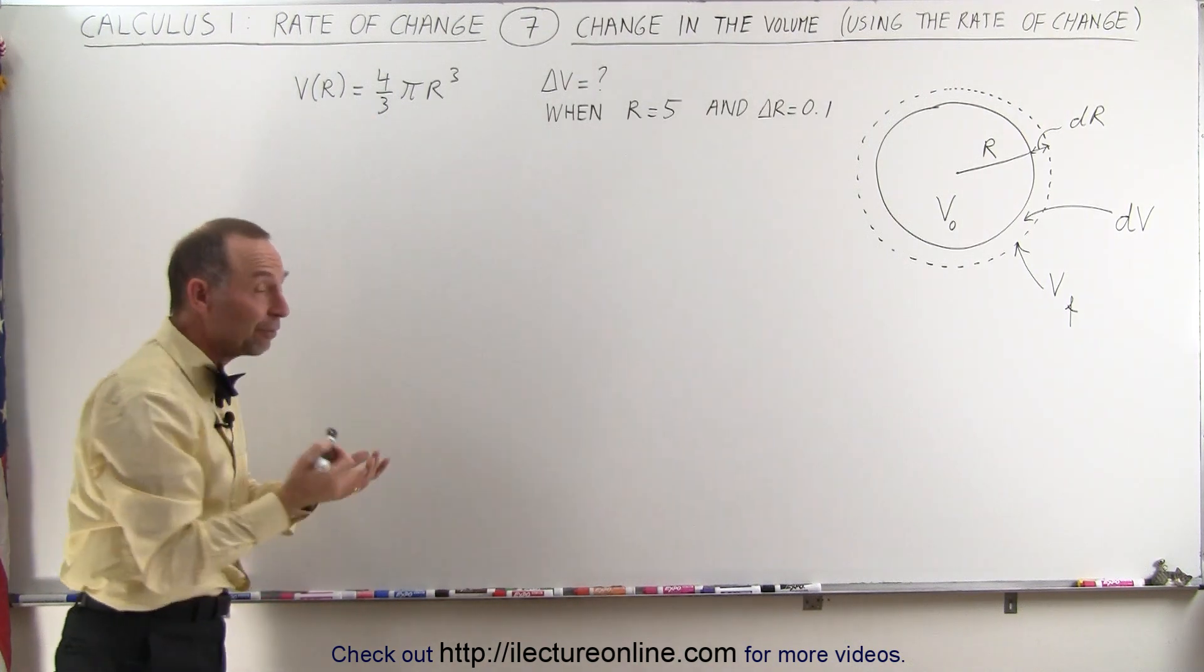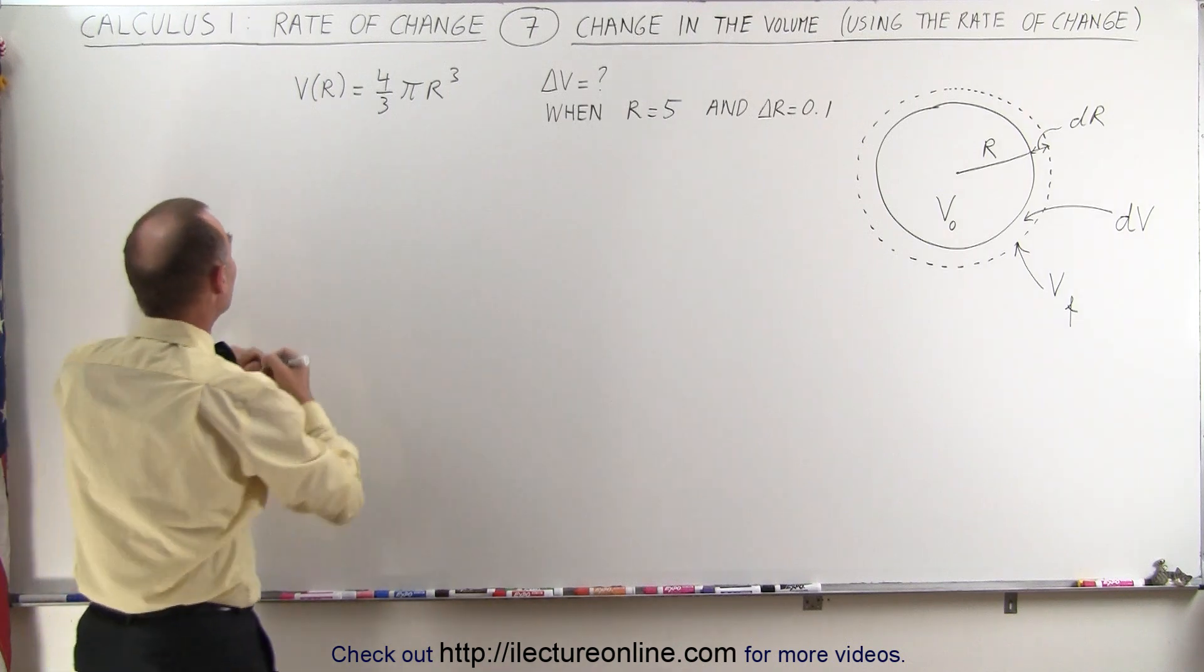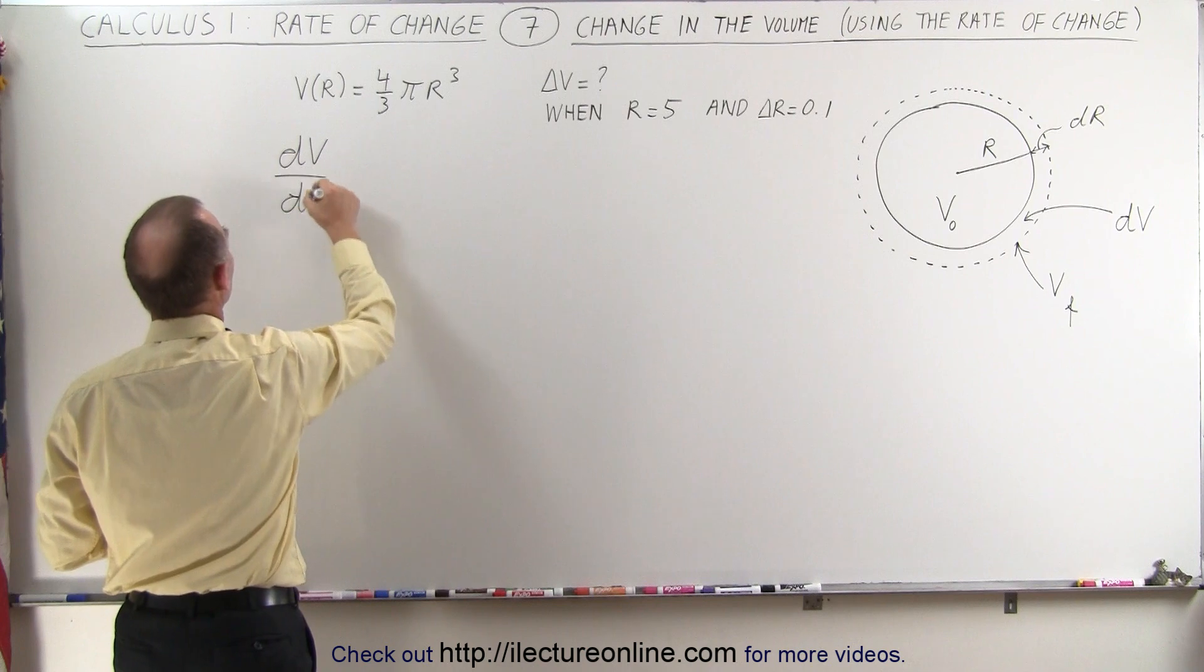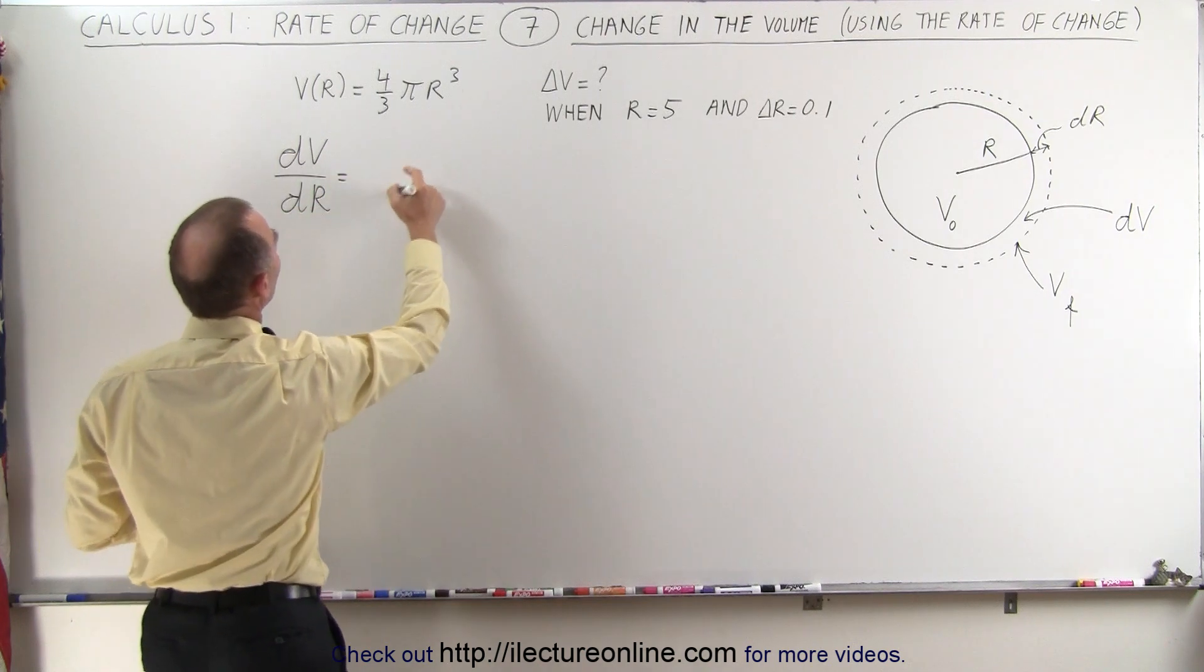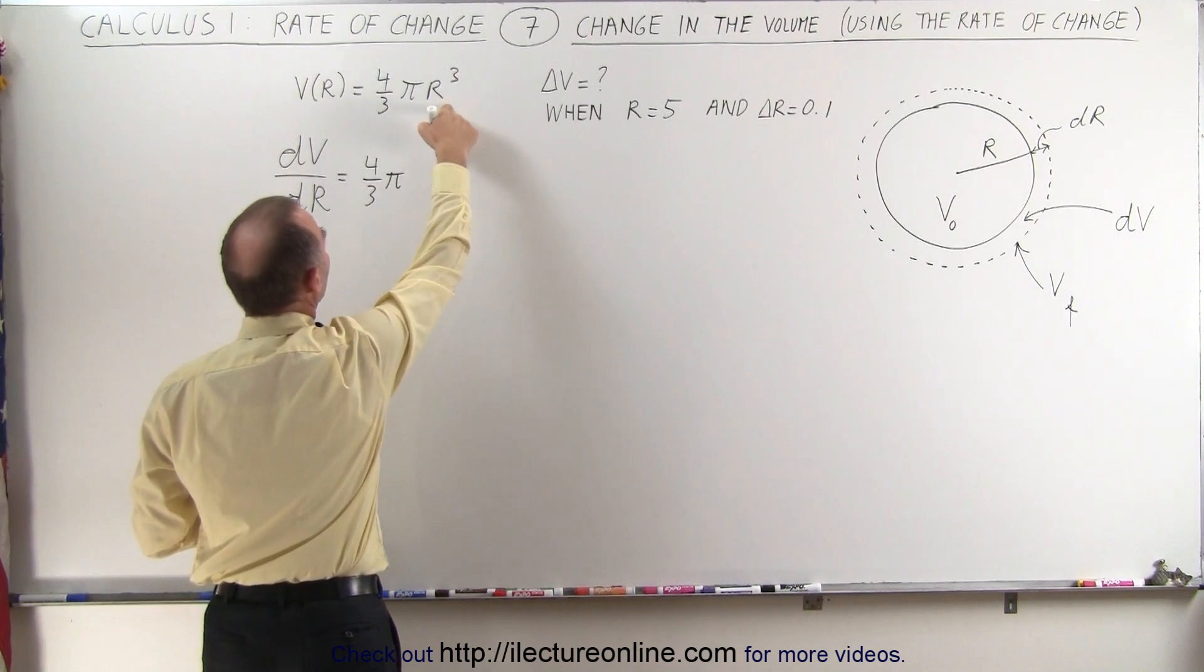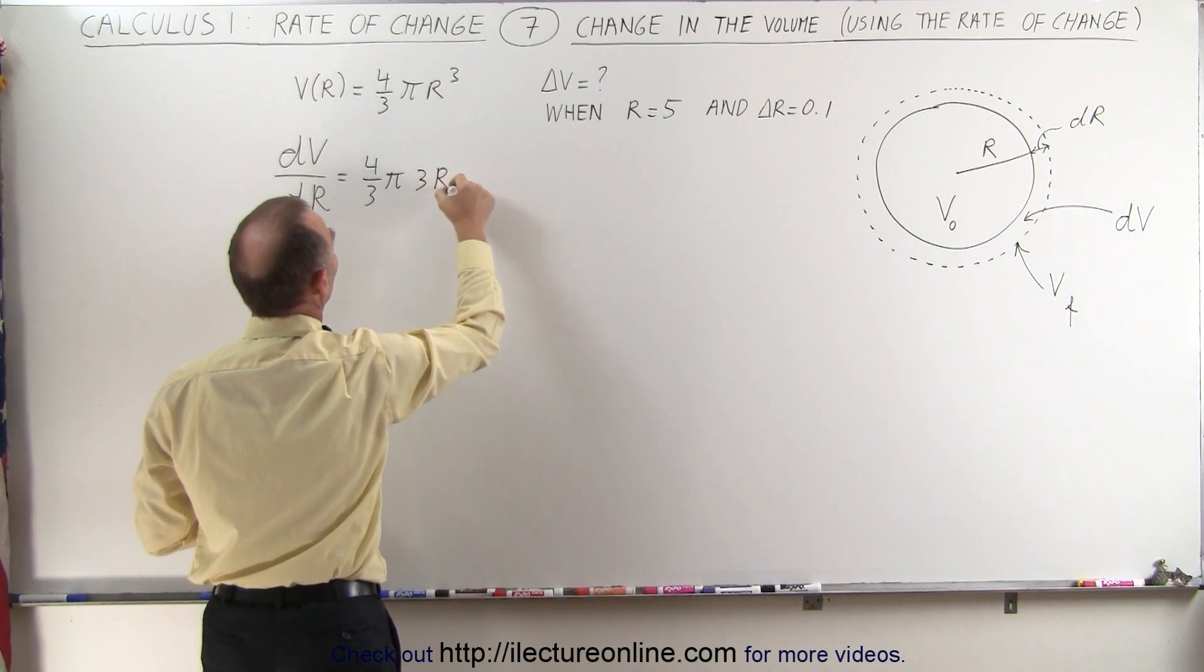If we now take the derivative of that volume with respect to the radius, we get the following. dV/dr is equal to, well we have the constants 4 thirds pi, and then the derivative of r cubed is 3r squared.